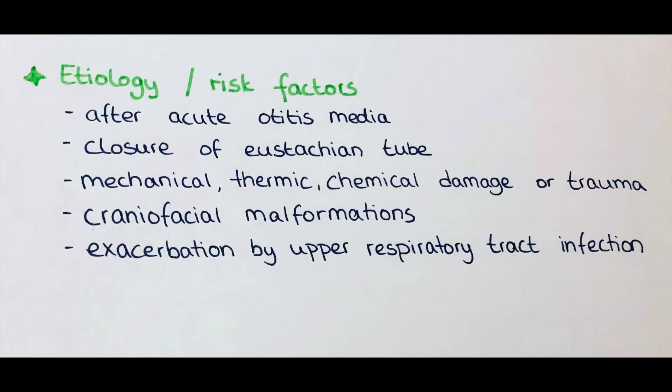There are different risk factors and etiological reasons for the development of chronic suppurative otitis media. Often it happens after acute otitis media when it's not properly treated or treatment was not completed. Other causes include closure of the Eustachian tube, and mechanical, thermic, or chemical damage or trauma to the tympanic membrane — whether by acid, extreme heat, or insertion of objects into the ear — which can allow bacteria to enter.